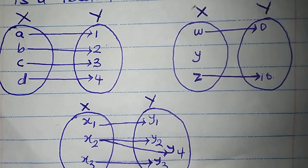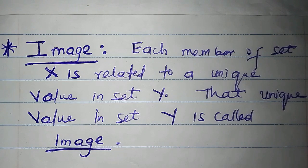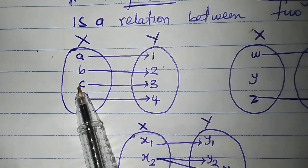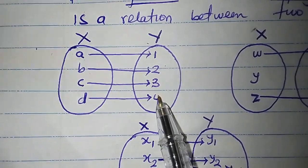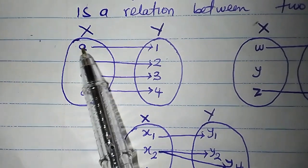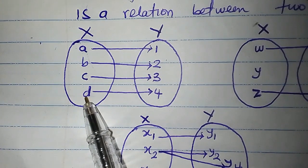There are some terms used in functions. In a function, each member of set X has exactly one value in set Y. That value in set Y that is related to a value in set X is called the image. For example: A is related to 1, B to 2, C to 3, and D to 4. All these output values are called images. So 1 is the image of A, 2 is the image of B, 3 is the image of C, and 4 is the image of D.